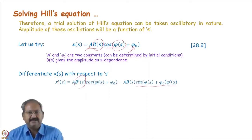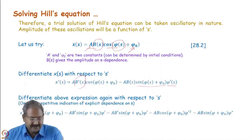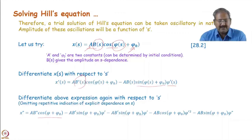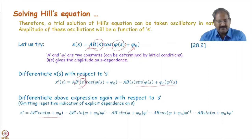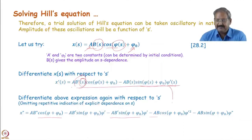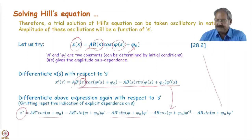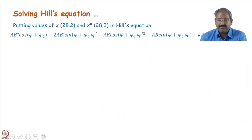We have x'' and our trial solution x, so we substitute into the Hill's equation: x'' + K·x = 0. We get an expression where cosine and sine coefficients should separately be zero to satisfy this equation for all values of S. Collecting the terms with sine, the coefficient of sine gives: minus 2A·B'·φ' minus A·B·φ'' = 0. After canceling A and rearranging, we get: 2B'·φ' + B·φ'' = 0. This equation relates the amplitude B to the phase φ.